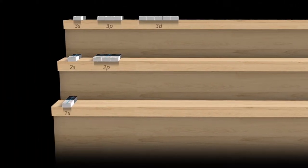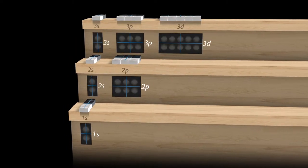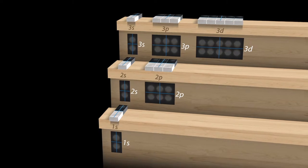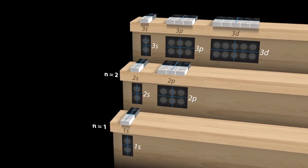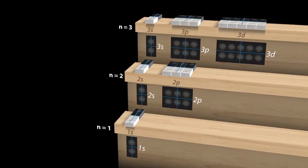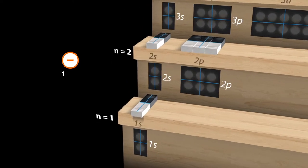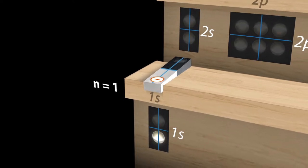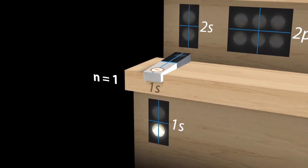Let us assign the possible vibrational states to the keys of an organ. The organ manuals correspond to the energy levels n equals 1, 2, 3 and so on. An electron can excite a specific vibrational state. The key is then pressed, so to speak, and the corresponding vibration is activated.